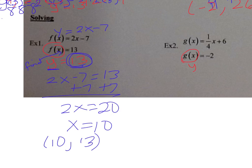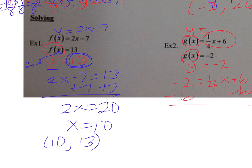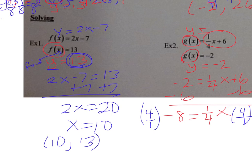And the same thing here — find your x value when your y value is negative 2. So negative 2 is equal to one-fourth x plus 6. Subtract 6 from both sides: negative 8 equals one-fourth x. To get rid of the fraction, multiply both sides by the reciprocal, 4 over 1. Negative 4 times negative 8 gives x equals negative 32. We'll practice more in class tomorrow — have a good night.